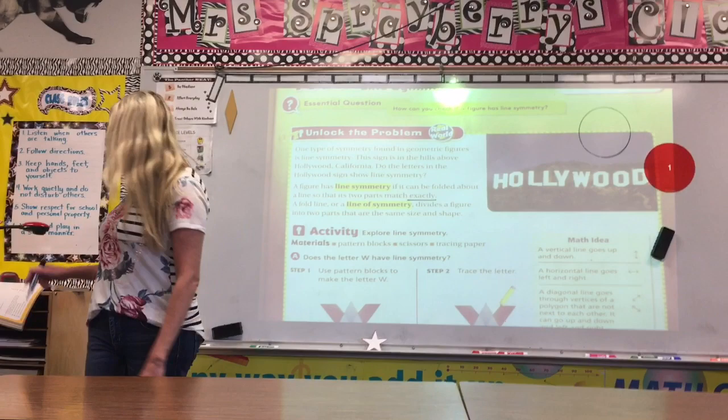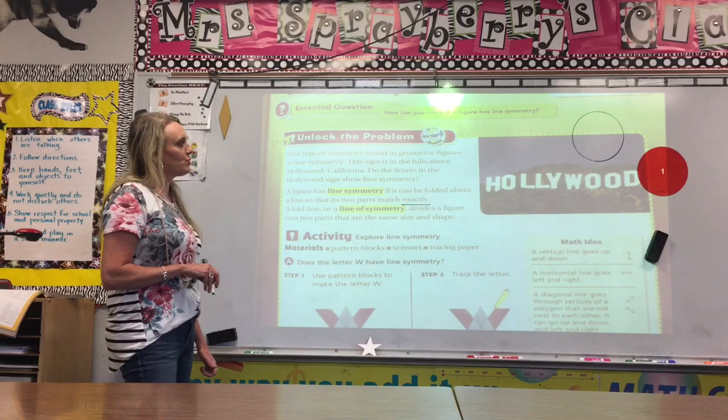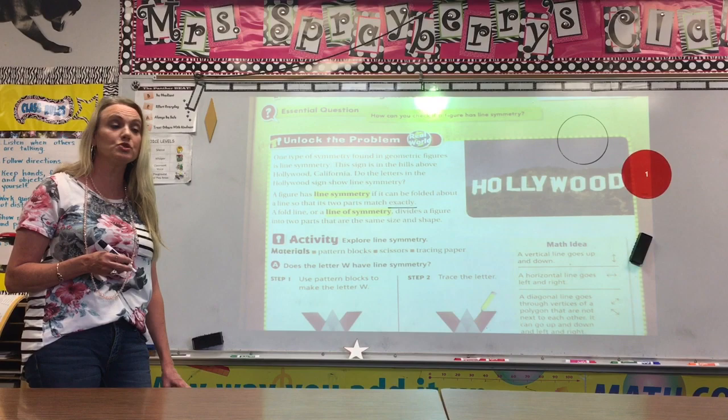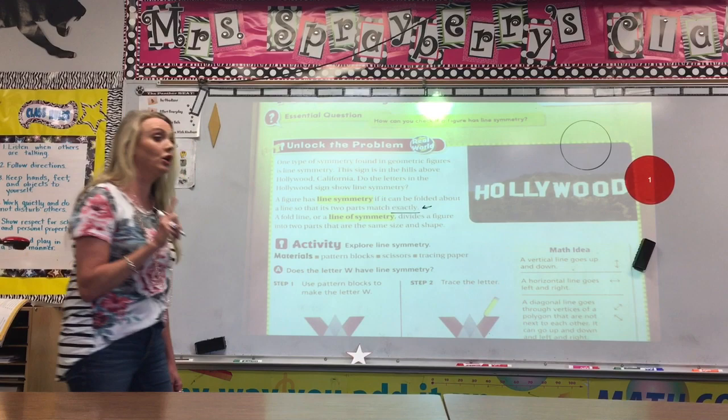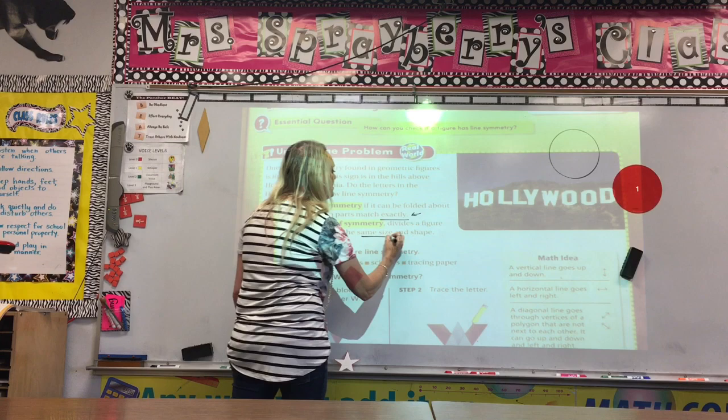I want you to take a look on page 473 in your GoMath, Volume 2. I want us to read quickly the paragraph of what line symmetry is, and then we're going to look at a few examples. One type of symmetry found in geometric figures is line symmetry. This sign is in the hills above Hollywood, California. Do the letters in the Hollywood signs show line symmetry? A figure has line symmetry if it can be folded about a line so that its two parts match exactly. Not close to it, but perfectly. A fold line, or line of symmetry, divides a figure into two parts that are the same size and shape.